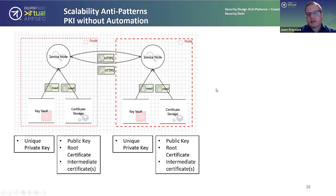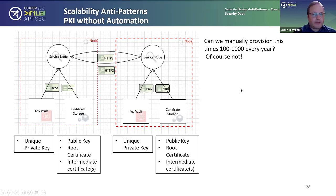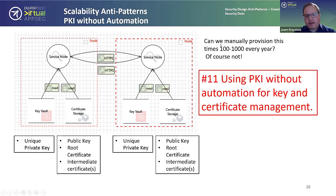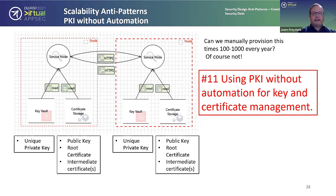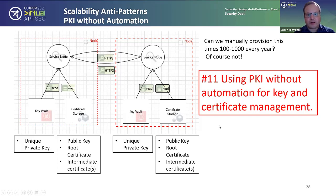PKI has a well-known issue: certificates expire. Can we manually provision this times a hundred or a thousand per year? Of course not. So using a PKI without planning for automation or key and certificate management is a big anti-pattern — we need to address this. If you're using a service mesh it may have that feature built in, but don't forget to plan for automation for entry and exit nodes as well. A/B testing rollover and similar things all need to be automated robustly. Key rotation brings down big companies — we've seen major outages from key and certificate expirations. That's an Achilles heel of a whole cloud setup.